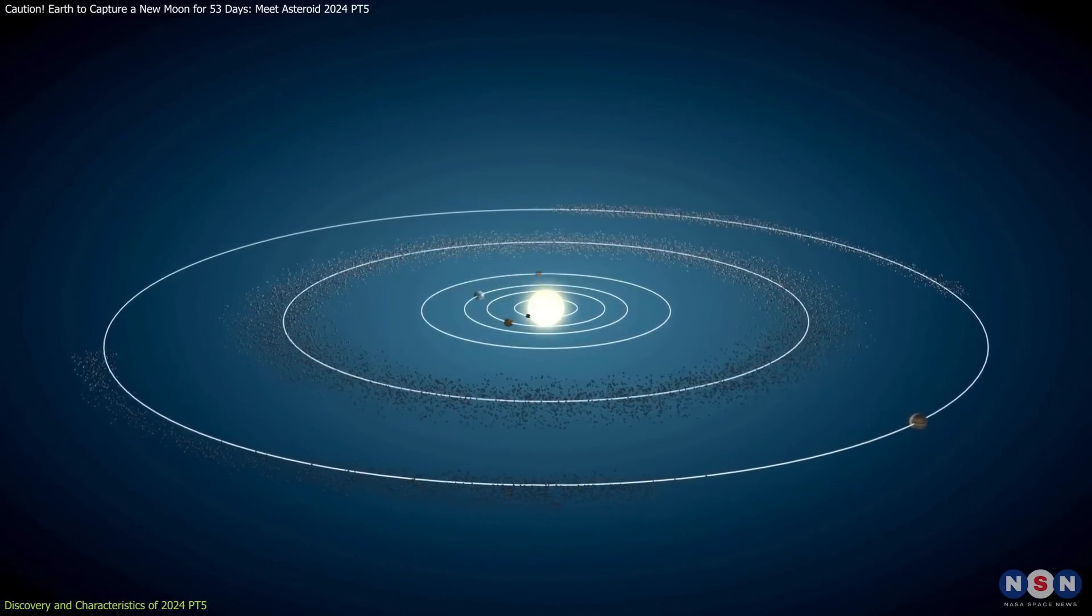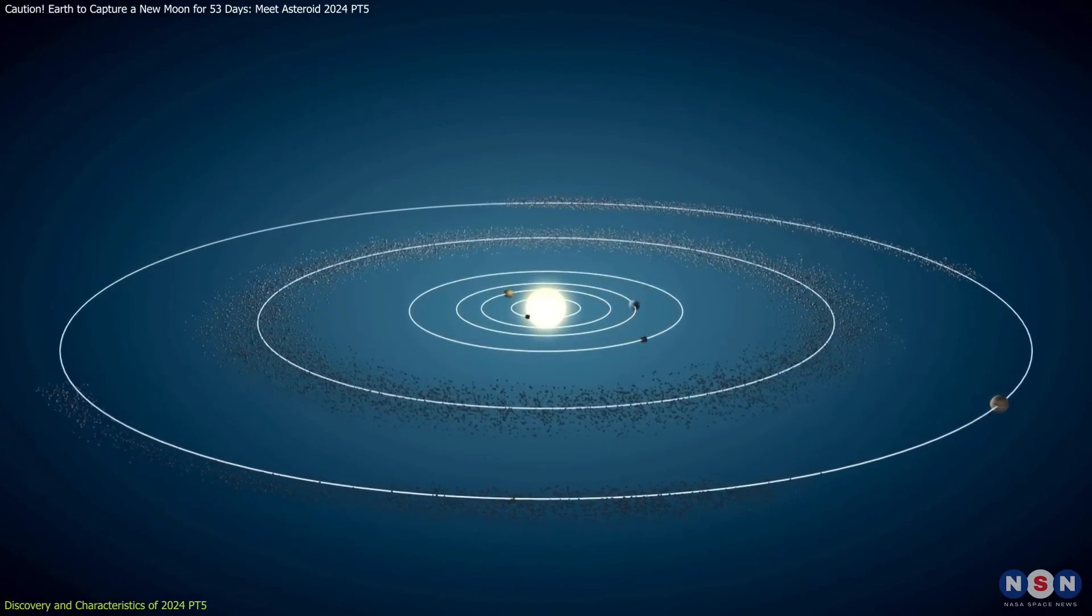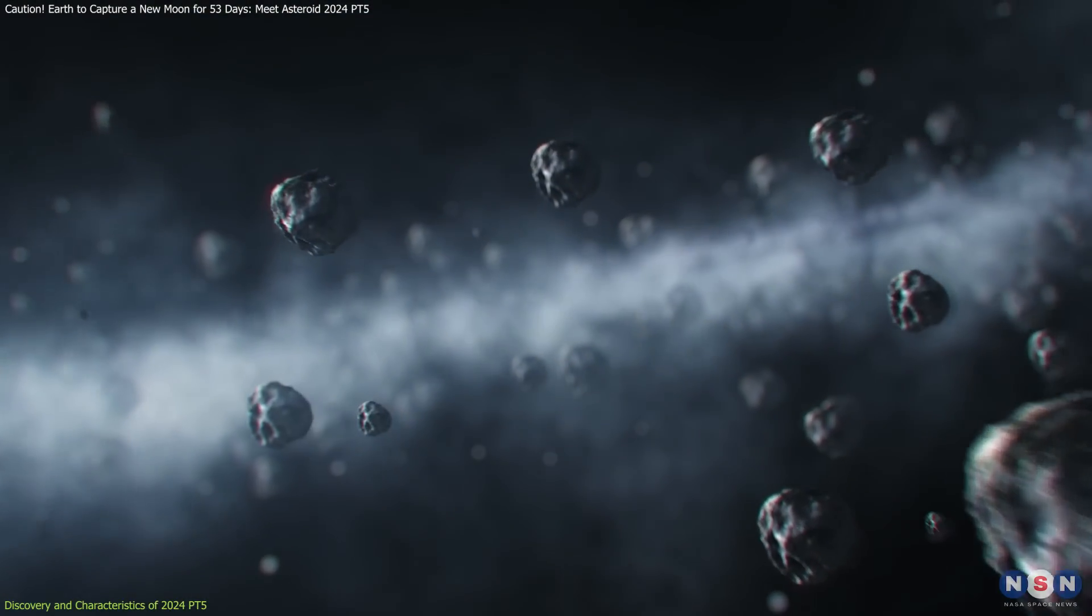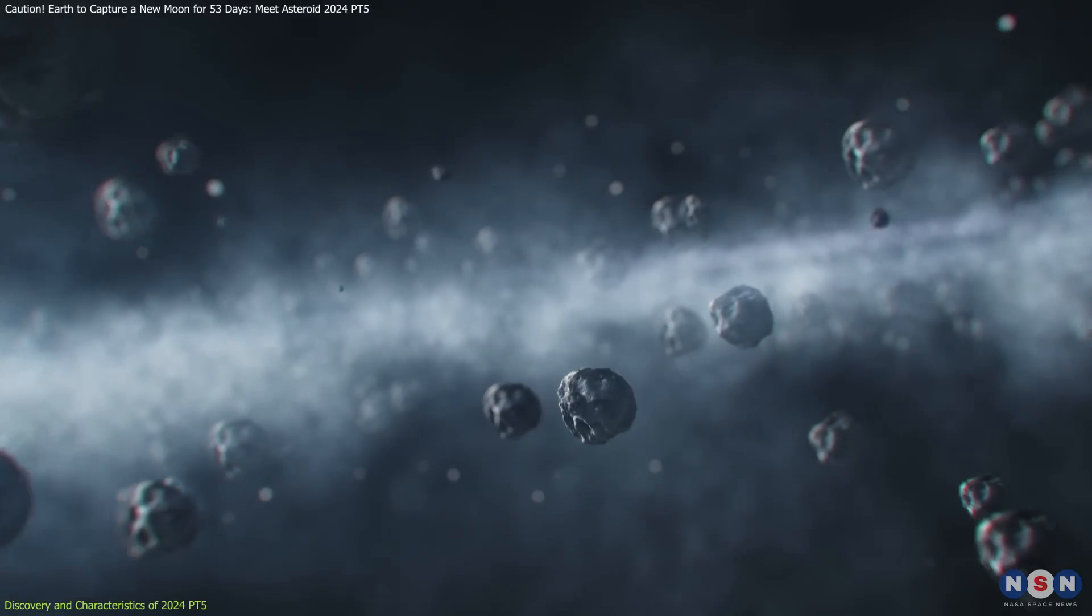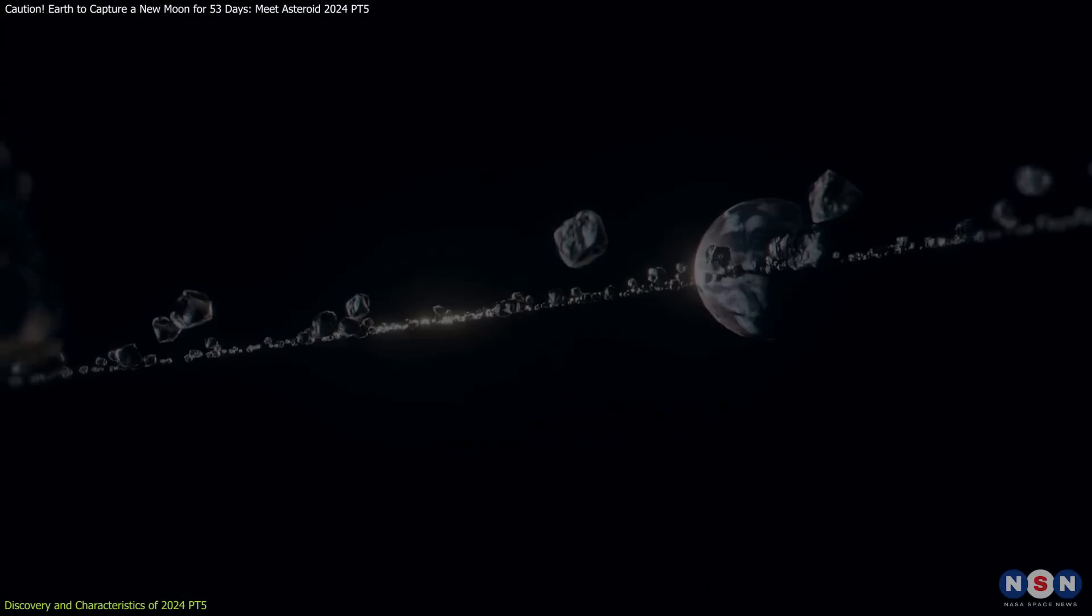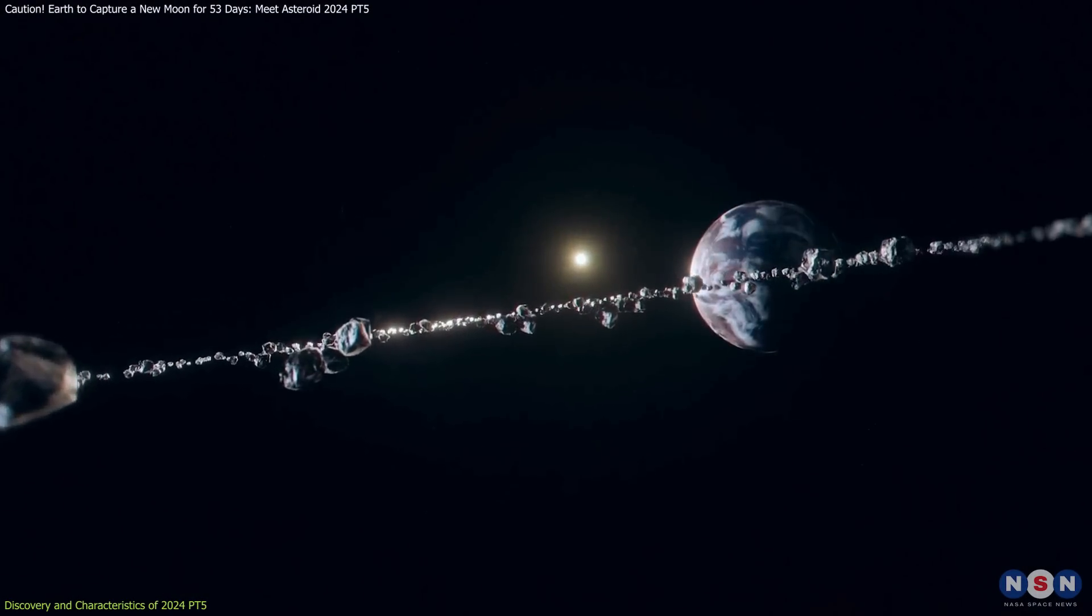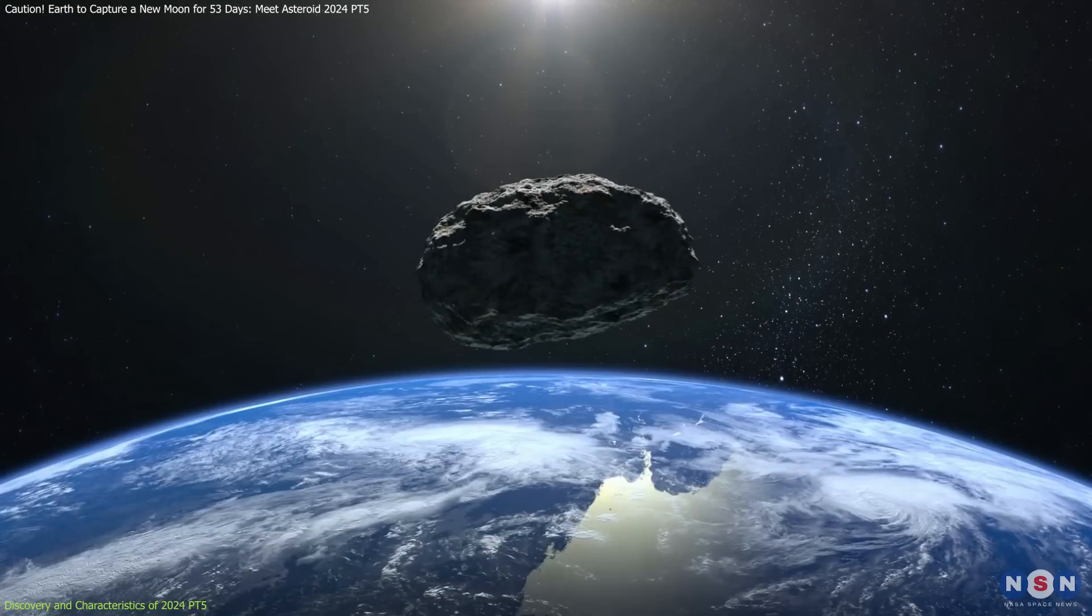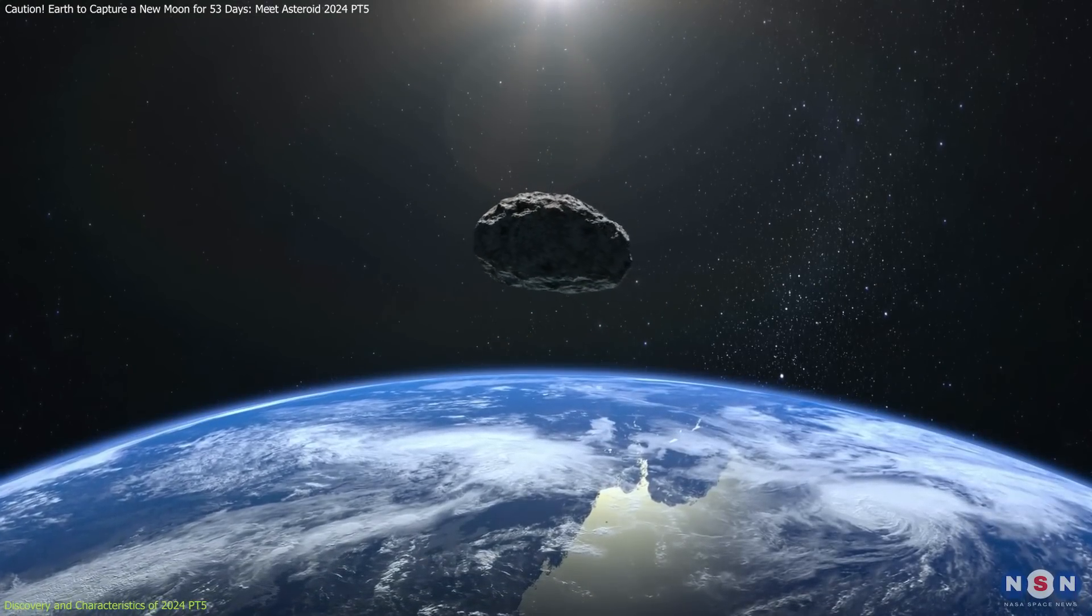This asteroid likely hails from the Arjuna asteroid group, which consists of small asteroids with orbits around the Sun that are very similar to Earth's. These asteroids, due to their proximity and orbital patterns, are more likely to be caught in Earth's gravitational pull.